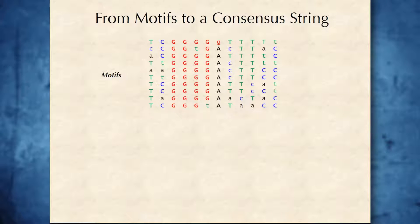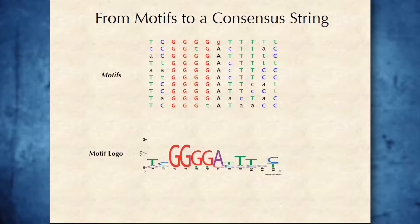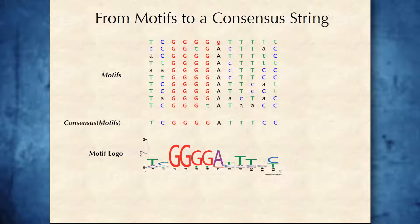Note that positions 2 and 3 in the motif matrix are the most conserved — nucleotide G occurs in these positions in every K-mer — whereas position 10, at the end of the motif matrix, is the least conserved. A common method of visualizing a motif matrix is with a motif logo, in which the size of a nucleotide correlates with how often it occurs in the motif matrix.